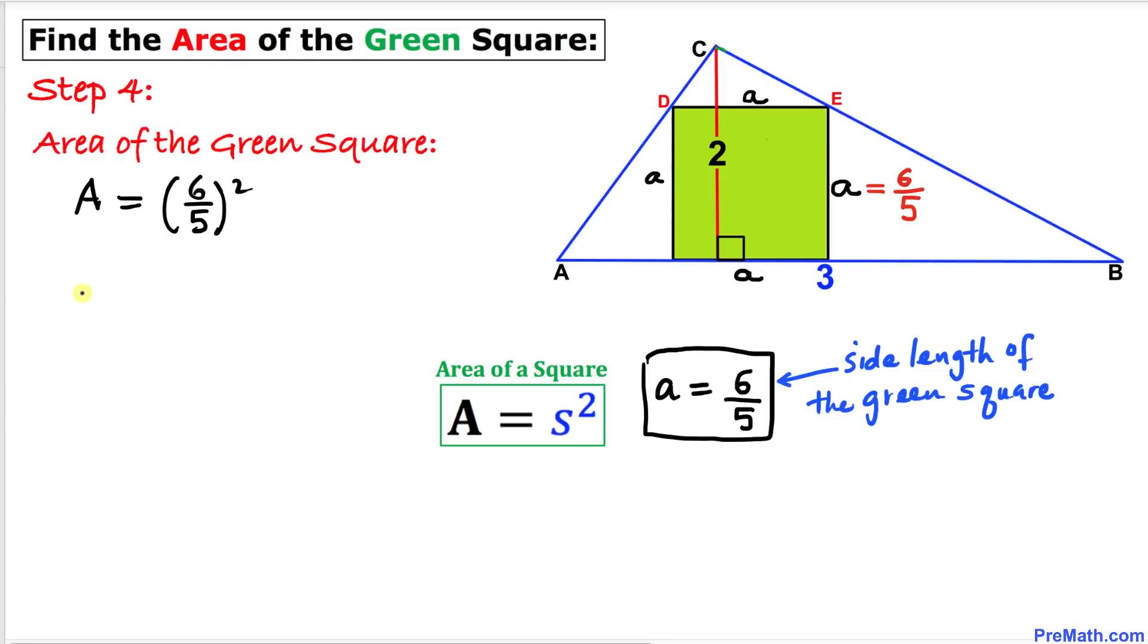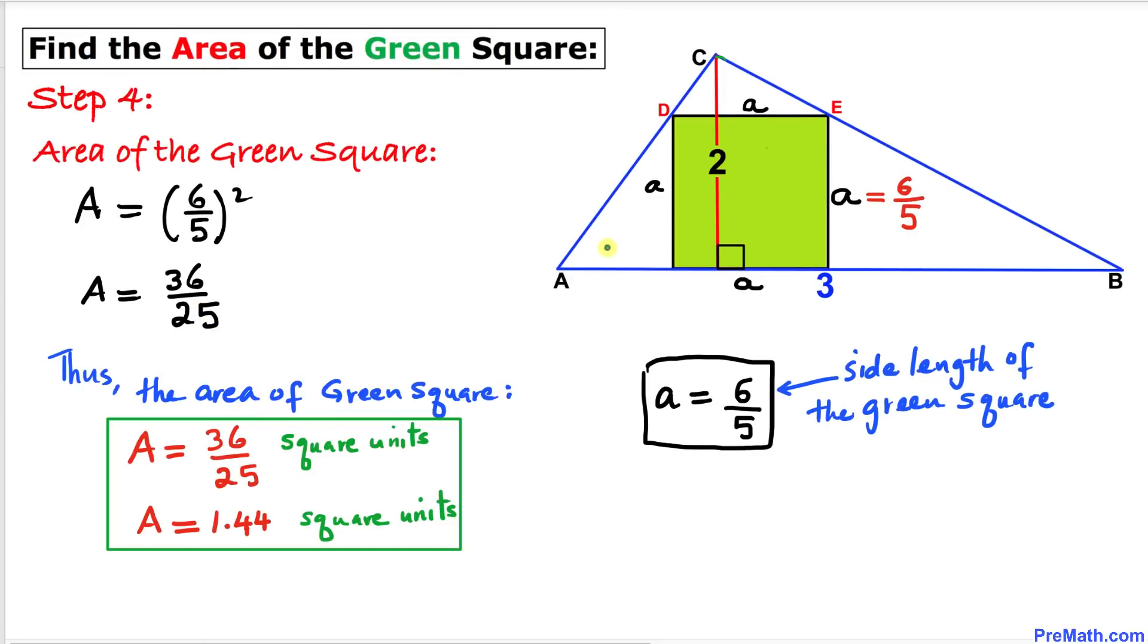If we take the square on the right hand side, that gives us 36 divided by 25. Thus the area of this green square turns out to be 36 divided by 25 square units, or in decimal form 1.44 square units. And that's our final answer.